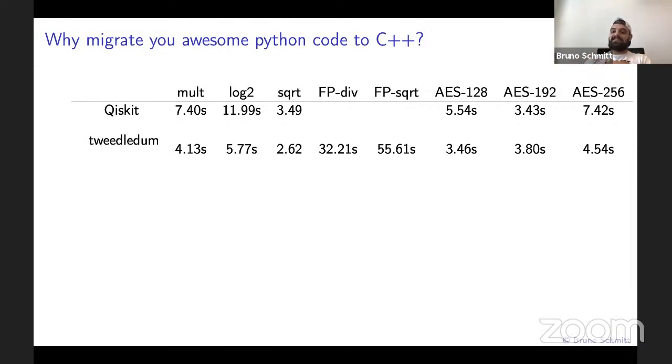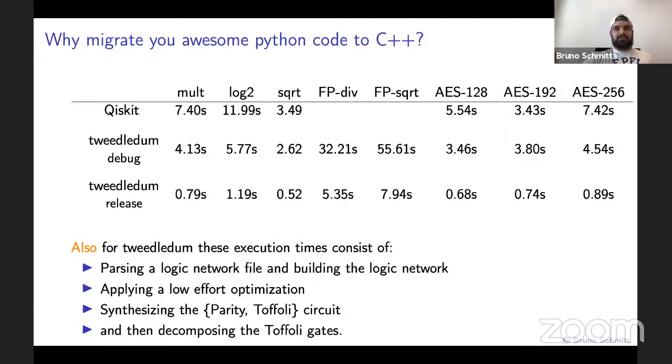When I run Tweedledum in release mode, things are much better. There is kind of a 10X improvement. Also in Tweedledum, I'm not only measuring the execution time of the substitution process. Because in Tweedledum it was so fast, I decided to measure the execution time for the whole flow. So what Tweedledum is doing this time is parsing a logic network file, building the logic network, applying some low effort optimization to this logic network, synthesizing the parity into Toffoli circuits, and then decomposing the Toffoli gates. It is able to do all that 10 times faster than what a Pythonic framework, in this case Qiskit, can do just the substitution.